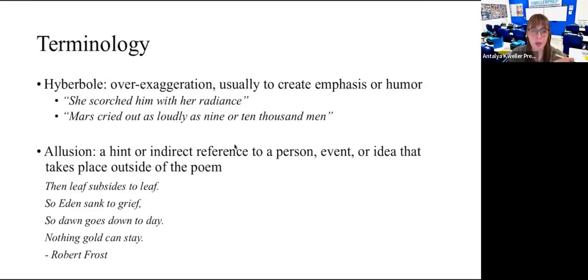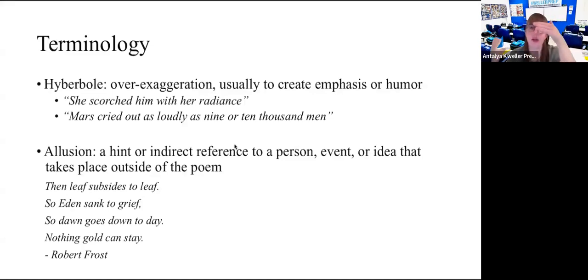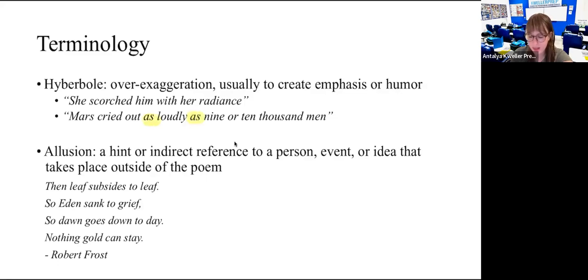Then we have something called hyperbole — an over-exaggeration, usually used to create emphasis or humor. In the first example, 'she scorched him with her radiance' — scorched is definitely an over-exaggeration. Or in the second example, 'Mars cried out as loudly as nine or ten thousand men.' This also sounds like a simile because of the word 'as,' but it's also a hyperbole because it's an exaggeration — this person cannot cry out as loudly as ten thousand men.